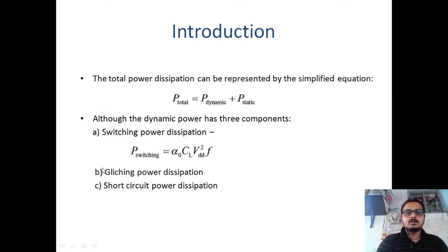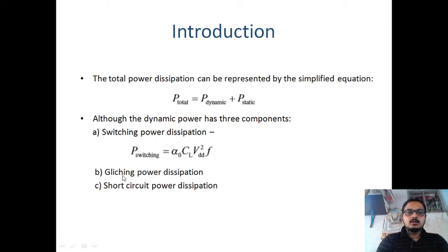The second component is glitching power dissipation. When gate logic has a certain delay, the output gets glitches, and due to these glitches, glitching power dissipation occurs. This can be ignored, as glitching power dissipation is almost 10 percent and can be neglected.